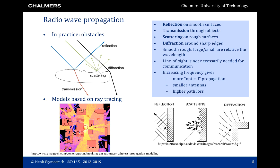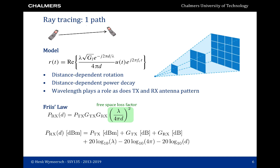We now look at ray tracing in a little bit more detail for a simple case of a single path. We consider a transmitter and a receiver with a single line-of-sight path between them. The transmitter sends a signal u(t), which is up-converted with the carrier frequency and then arrives at the receiver in the form of r(t). Ignoring noise, the channel is given by a complex number. We see a number of effects: a rotation due to propagation with distance, and a decay with distance.